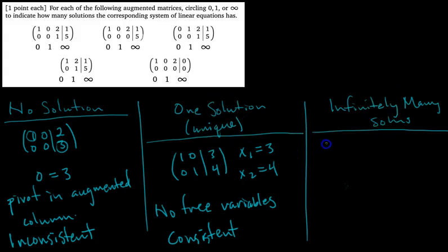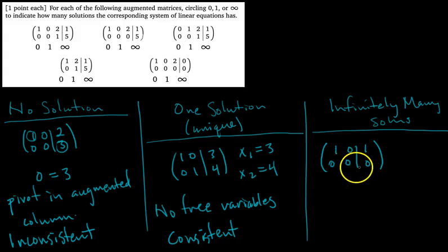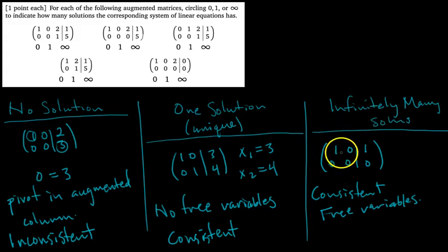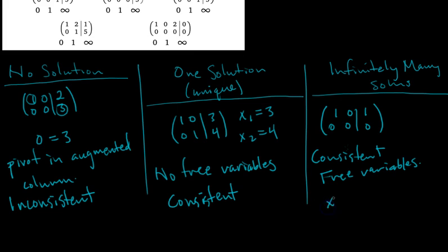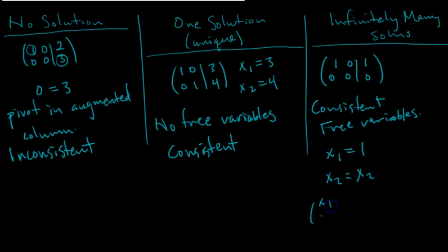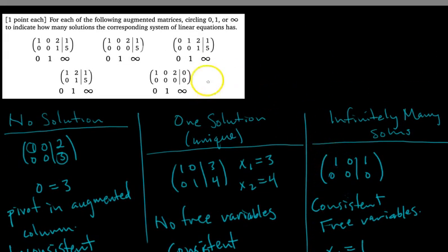Lastly, for infinitely many solutions, we'd see something like a row of all zeros at the bottom, meaning zero equals zero, which is always true — so the system is consistent. Here x2 is a free variable, so we can say x2 is anything we want. We write the solution set in parametric vector form: x1 equals 1, x2 is free, so x2 equals x2. When we write the vector [x1, x2] in parametric vector form, we get the full solution set representing infinitely many solutions.